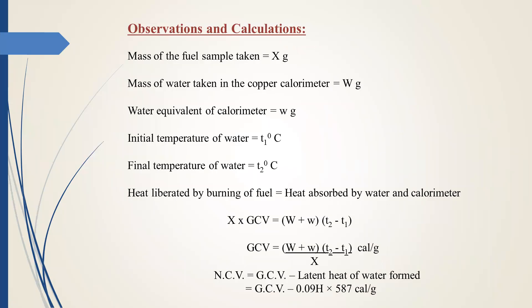These are the observations which are obtained in bomb calorimeter. First, mass of fuel sample taken is X grams. Mass of water taken in copper calorimeter is W grams. Water equivalent of calorimeter is equal to small w.